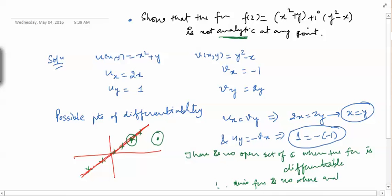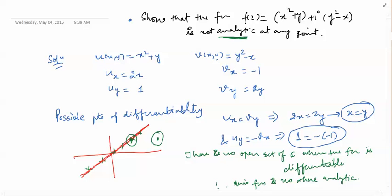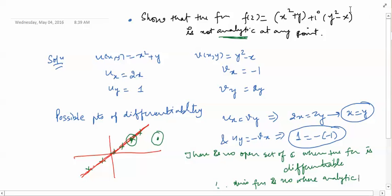The key point is that CR conditions are necessary but not sufficient for differentiability. In the next video we will look at an example where CR conditions are satisfied at a point but the function is not differentiable at that point. Thank you.